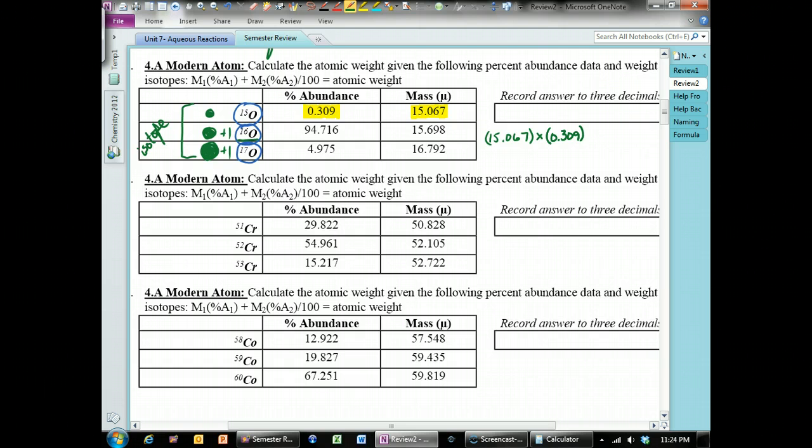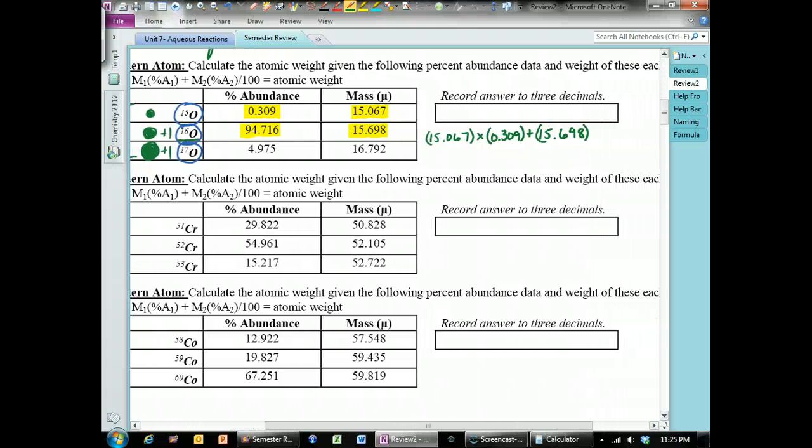It represents how many oxygen 15s you have. Then, we've got to add it to the mass of oxygen 16, which is 15.698 in this example, even though this is just being used as an example. And the number or percentage, most of these atoms are that,